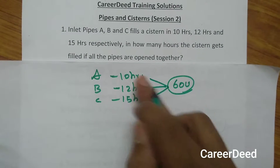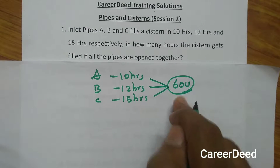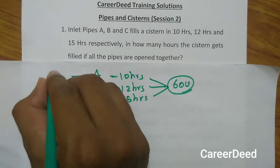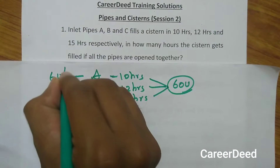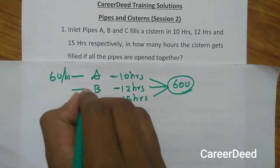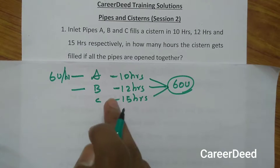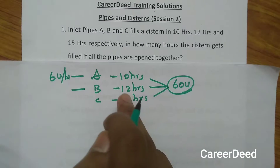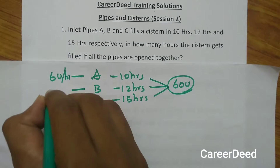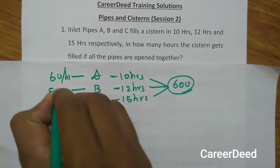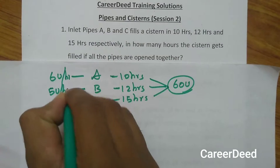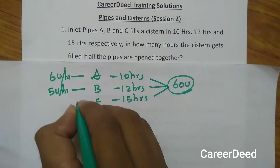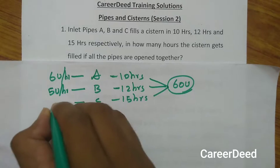Pipe A will fill 60 units in 10 hours, which means in 1 hour pipe A will fill 6 units. So 6 units per hour is the efficiency of pipe A. Pipe B will fill the 60 units in 12 hours, meaning in 1 hour pipe B will fill 5 units. Pipe C will fill the 60 units in 15 hours, meaning in 1 hour pipe C will fill 4 units.